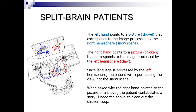When asked why the right hand points to the picture of a shovel — since the left hemisphere only sees the claw, not the shovel or the snow scene — the person confabulates a story. They make up something that makes sense of what they're conscious of. They'll say they needed the shovel to be able to shovel out the chicken coop, making a use for the shovel even though it was picked because it corresponds with the snow. They don't see the snow — that is to say, the left hemisphere doesn't see the snow — so they make up a story to make sense of this shovel.